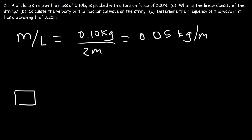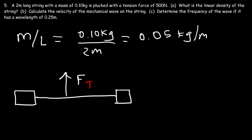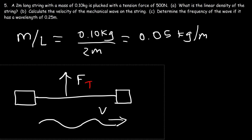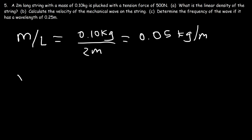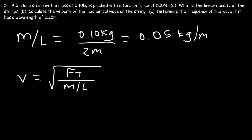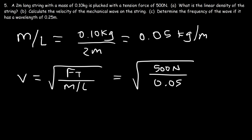Let's draw a picture. We have two boundaries with a string in between them. If we apply a tension force on a string, we can create a wave pattern. What we need to do in part B is calculate how fast that wave is moving. The velocity of the wave equals the square root of the tension force divided by the linear density. The tension force is 500 newtons and the linear density is 0.05. So 500 divided by 0.05 is 10,000, and the square root gives us a speed of 100 meters per second.